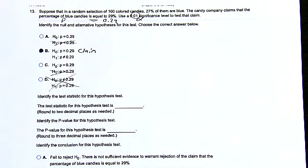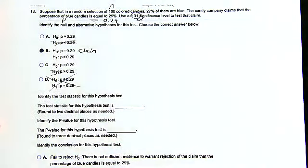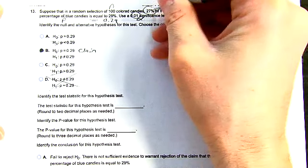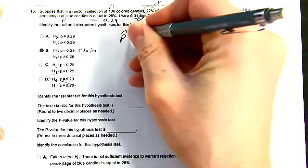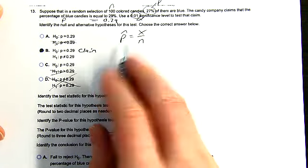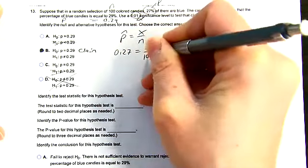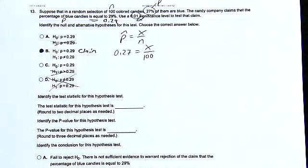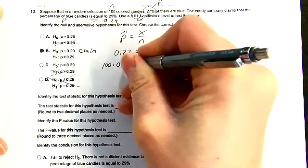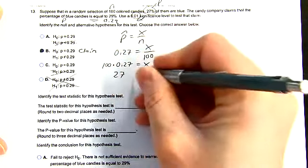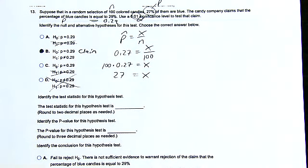In this problem they gave you N = 100, but they gave you P-hat (0.27) rather than X. Since P-hat = X/N, you solve for X by multiplying both sides by 100 — so there were 27 blue candies in this bag of 100.